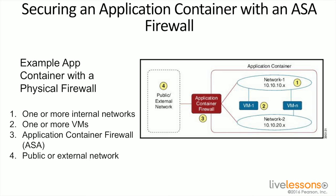In this situation, we've got one or more internal networks. Those are identified by the ones that you're seeing there. You've got network one, which is 10.10.10.x, and network two, which is 10.10.20.x. You also have one or more virtual machines, shown in the diagram — two virtual machines, one splitting between the two network segments and one that is only available on one network segment.